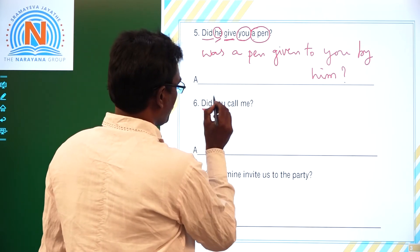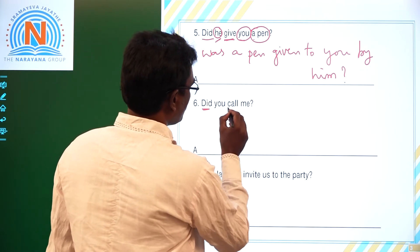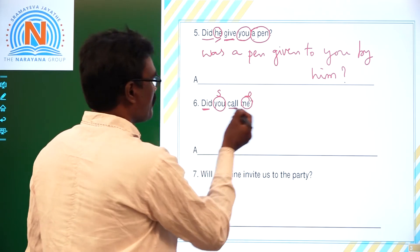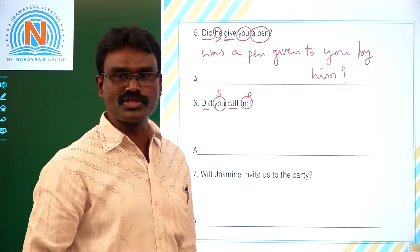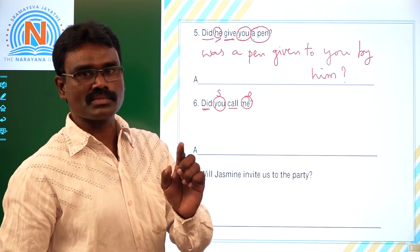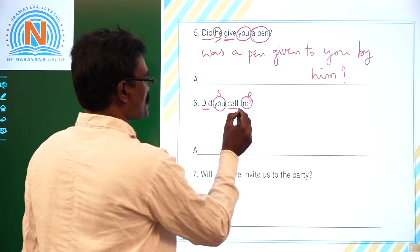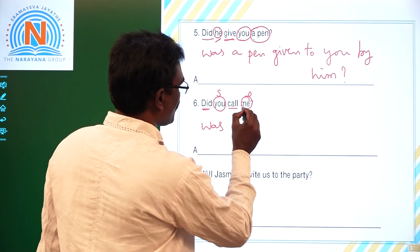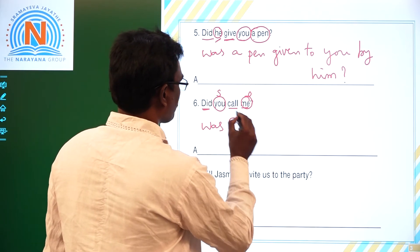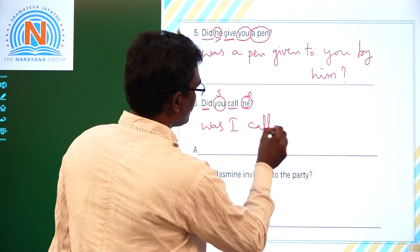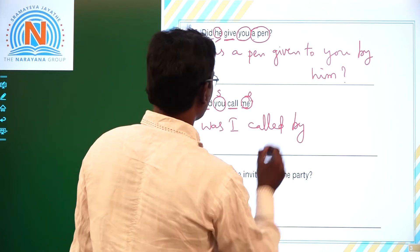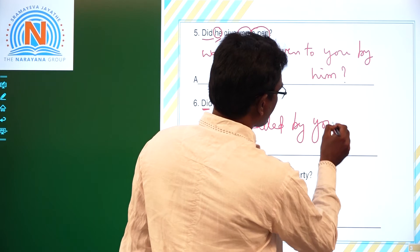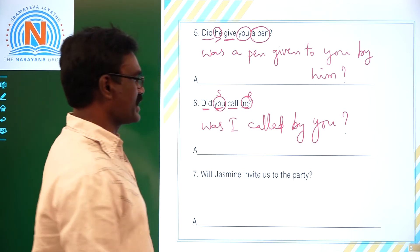Sixth one: 'Did you call me?' 'Did' is the helping verb, 'call' is the main verb, 'you' is the subject, and 'me' is the object. Past tense uses 'was' or 'were.' 'Me' becomes the subject 'I.' V3 of 'call' is 'called.' 'You' as subject becomes 'you' as object. Answer: 'Was I called by you?'